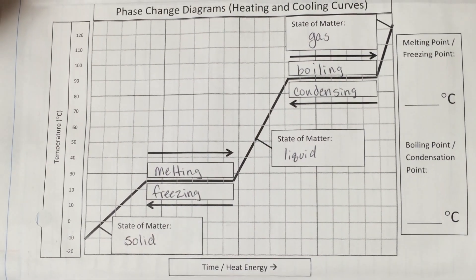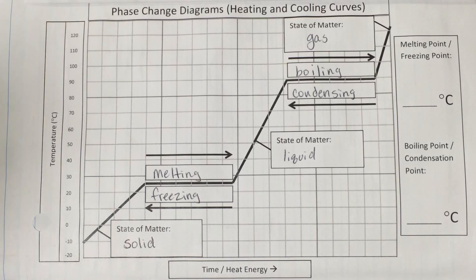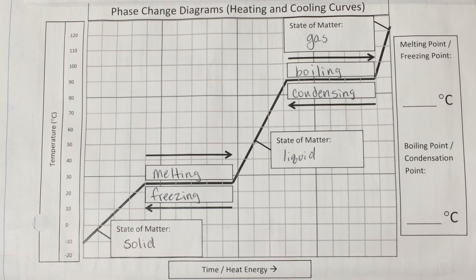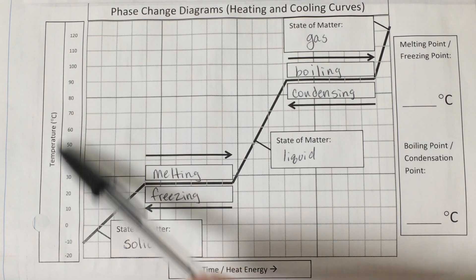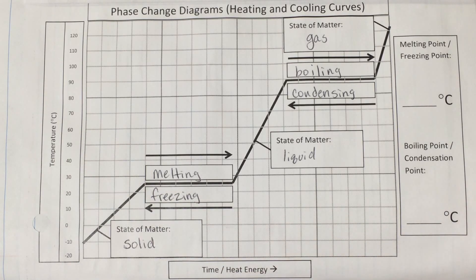In class we did a lab called investigate phase change, and in that lab we looked at the melting of ice, followed by the boiling of water, and we did what is called a phase change diagram, or a heating curve, and we also have cooling curves. So this is an example of a heating curve right here. You'll notice that it starts, well first it is plotting temperature of a substance versus time or increasing heat energy.